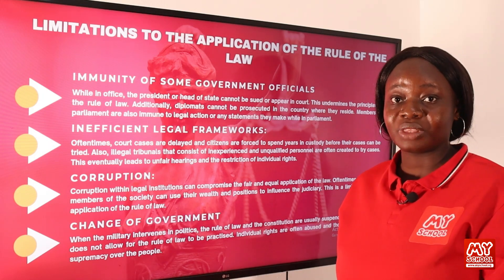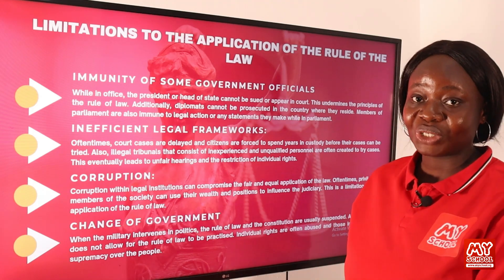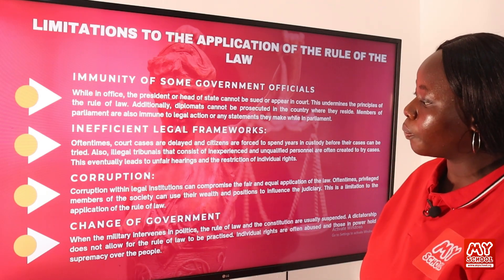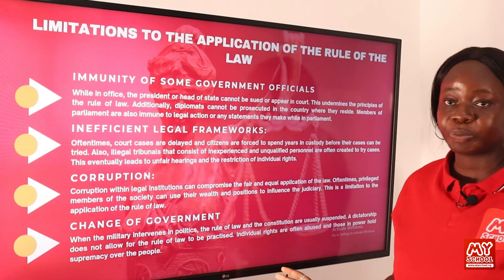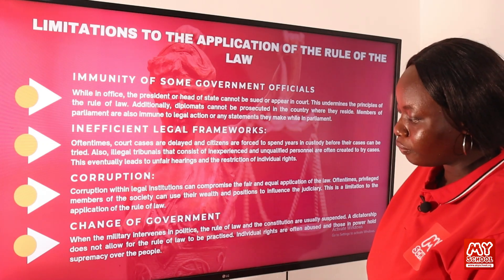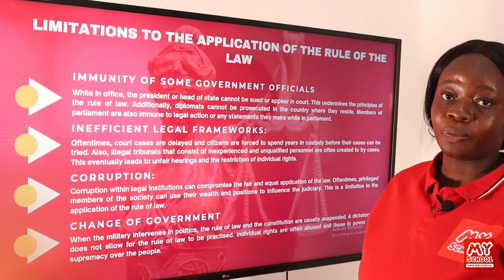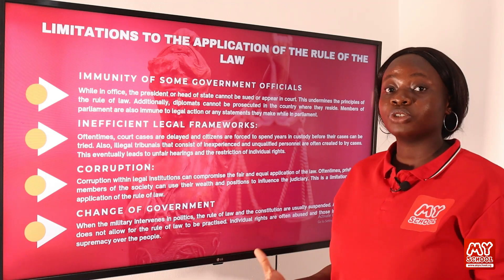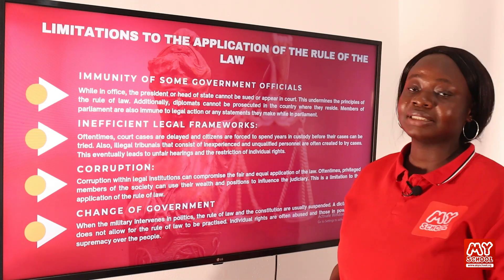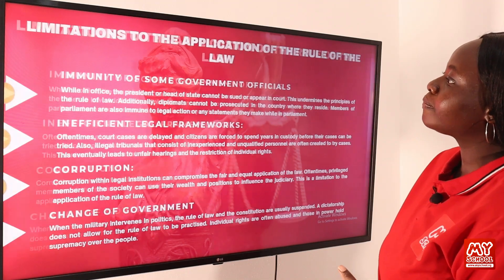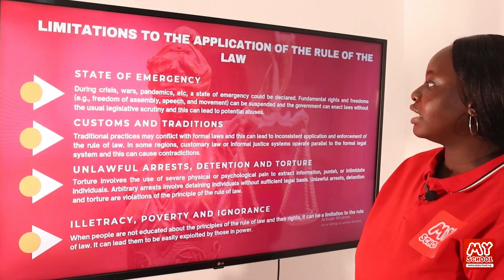People with status and wealth can use that to bribe judges, allowing them to win cases. This undermines the principle of the rule of law. We also have change of government: when the military intervenes in politics, the rule of law and the constitution are usually suspended. A dictatorship does not allow for the rule of law to be practiced — individual rights are often abused, and those in power hold supremacy over the people. In a military regime, the rule of law and the constitution become effectively powerless.